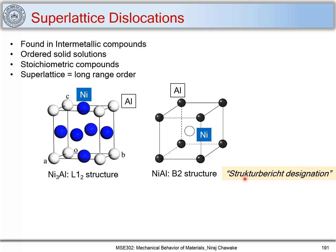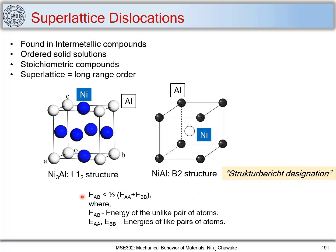These are called Strukturbericht designations. As for why stoichiometric compounds form: if you look at thermodynamics, the bond energy EAB — the energy of the unlike pair of atoms in a binary AB system — is less than half the summation of bond energies of like pairs, that is ½(EAA + EBB). When EAB is less than ½(EAA + EBB), we tend to get ordered solid solutions or intermetallic compounds.